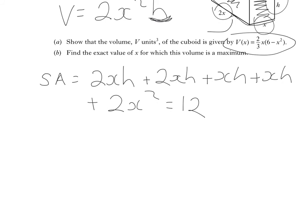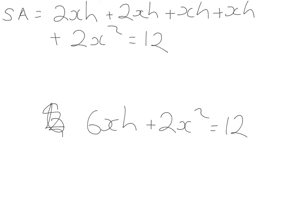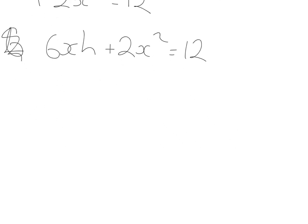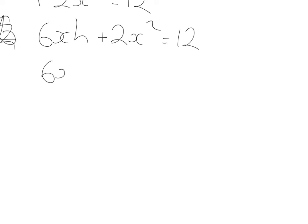I'm going to just collect this all together. 2xh plus 2xh plus xh plus xh is going to give me 6xh. So 6xh plus 2x² is equal to 12. What I'm looking to do now is to come up with something for h in terms of x, which means I'm going to change the subject of the formula here to h. So 6xh is equal to 12 minus 2x², and h is equal to (12 - 2x²)/(6x).